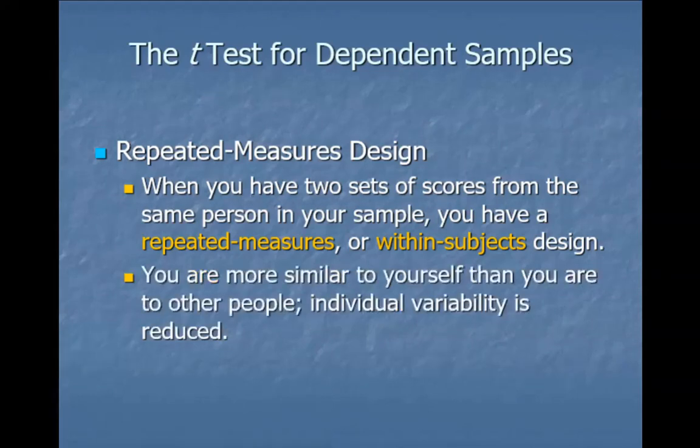This works out really well statistically because you're more similar to yourself than you are to other people. So all that random variability that happens when we do sampling is essentially gone. If I wanted to compare people who own dogs and people who don't own dogs, there are lots of differences between them.